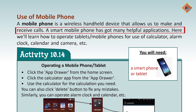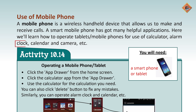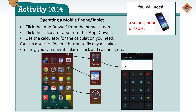Mobile phone ki aur bohot saari applications hain. Jaise ki aap jaante hain — hum apne mobile phones mein calculator ka istemal karte hain, alarm clock ke taur par use karte hain, aur ab to humare phones mein calendar bhi hai, camera bhi hai. Toh yeh tamam cheezein humare phone mein aati chalyi ja rahi hain.